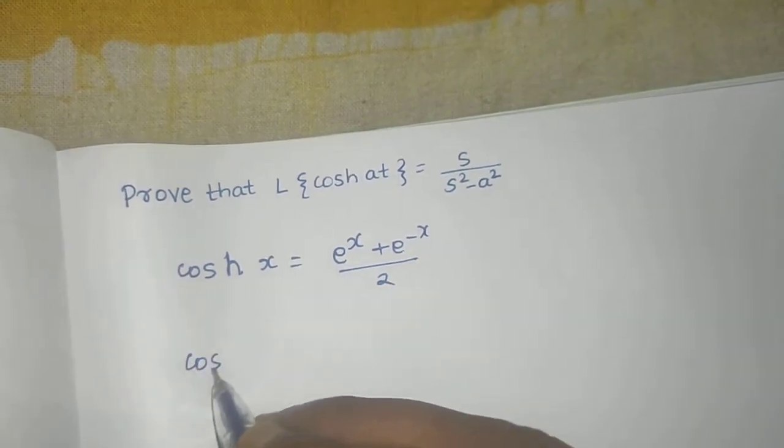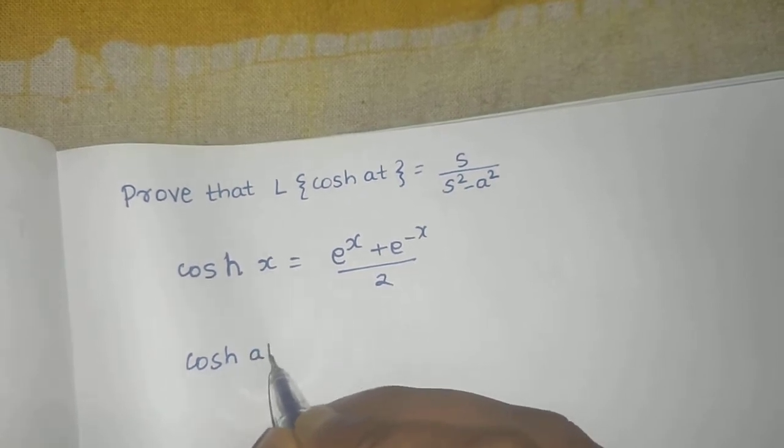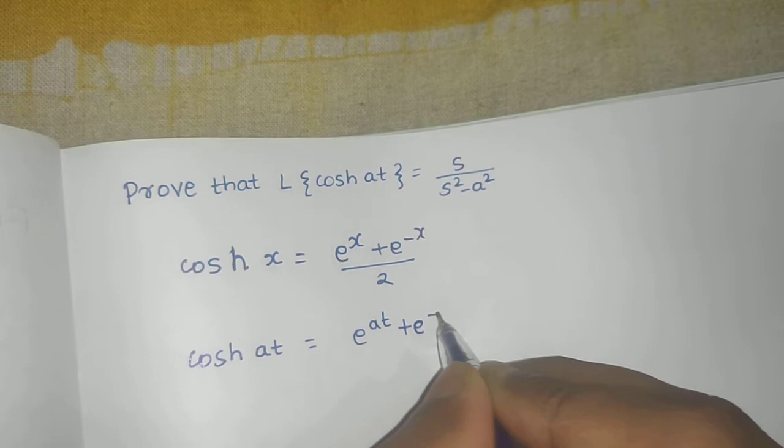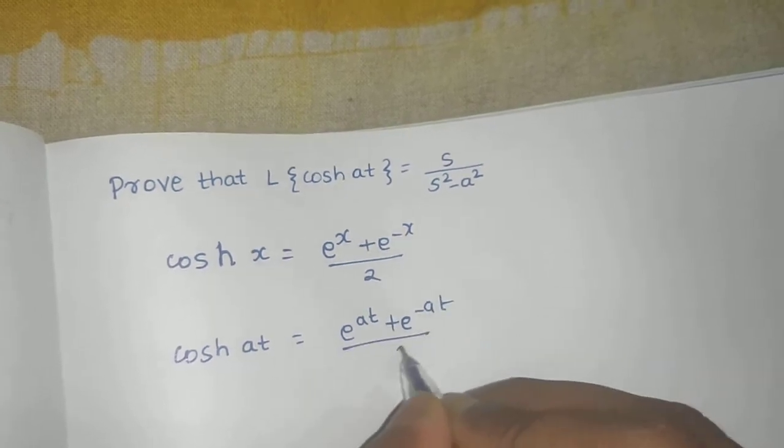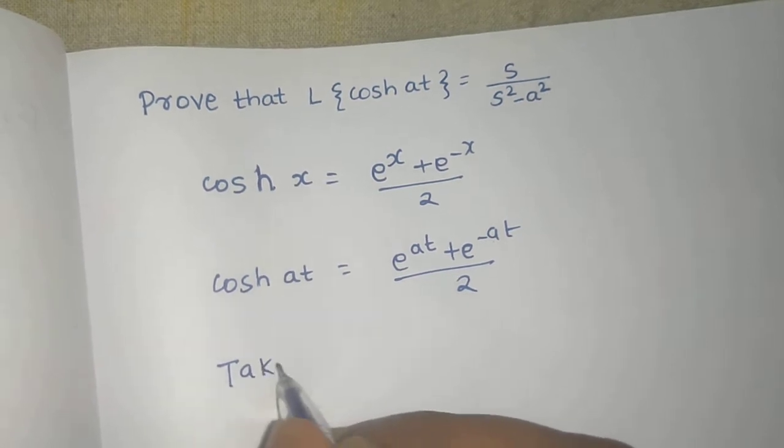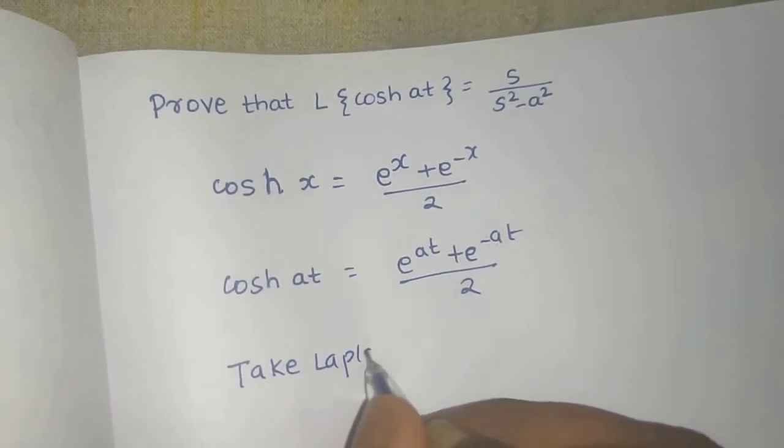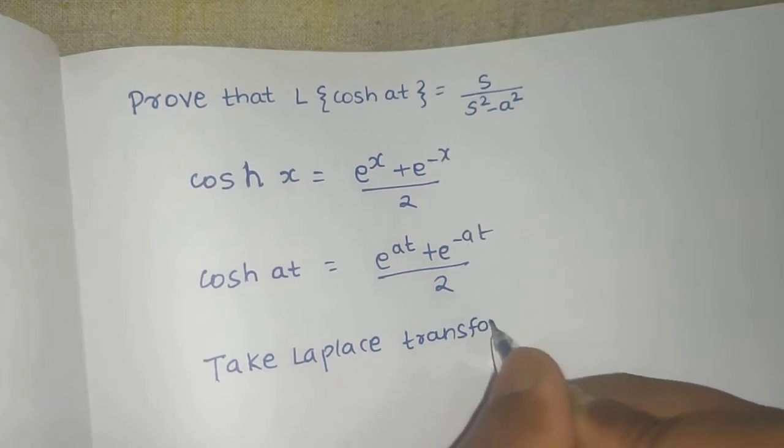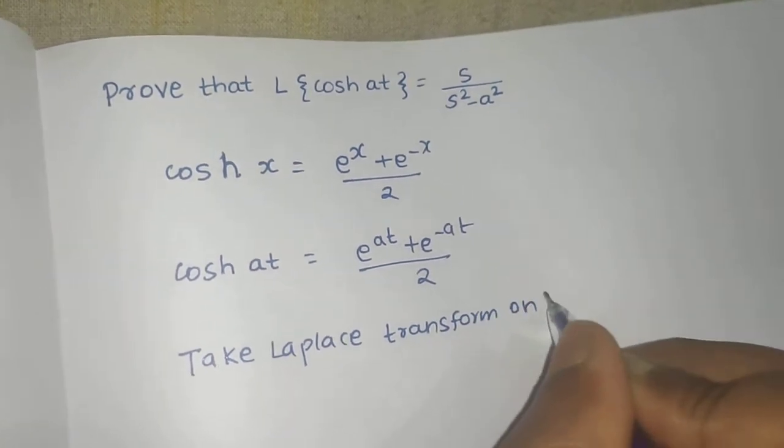So if I write the expression for cosh of at, that will be e to the power at plus e to the power minus at divided by 2. Then I will take Laplace transform on both sides.